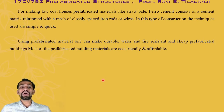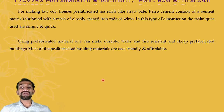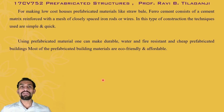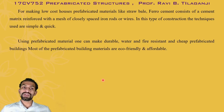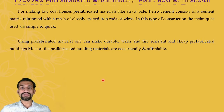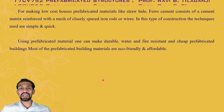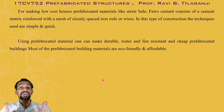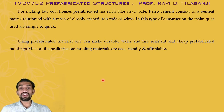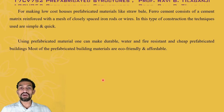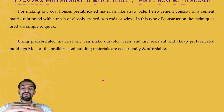For making low-cost houses, prefabricated materials like straw — for example, bamboo, which is one type of straw — can be used as prefabricated materials. Then ferro cement consists of a cement matrix reinforced with a mesh of closely spaced iron rods or wires. In conventional building houses, in the walls we provide some cupboards or open space up to the sill level.